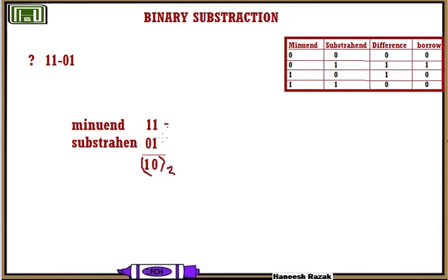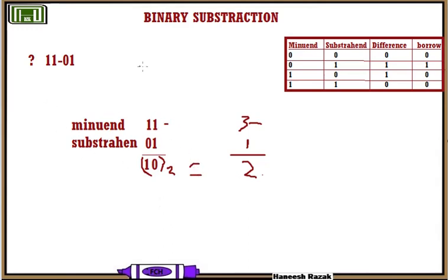If you want to check it: the decimal equivalent of binary 11 is 1×2¹ + 1×2⁰ = 2 + 1 = 3. The decimal equivalent of binary 01 is 0×2¹ + 1×2⁰ = 1. So 3 minus 1 equals 2. The decimal equivalent of binary 10 is 1×2¹ + 0×2⁰ = 2. So this confirms the answer is correct.